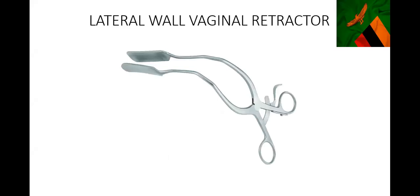This is a lateral vaginal wall retractor. When you want a good look at the cervix, you can retract the sides. If you are operating and don't want the vaginal walls to collapse, you put a retractor on the left and right side and open it, so you can do your procedure without the vagina getting in the way. This is a type of self-retaining vaginal retractor. There are two types of retractors: self-retaining retractors, and manual retractors that you have to hold onto all the time.